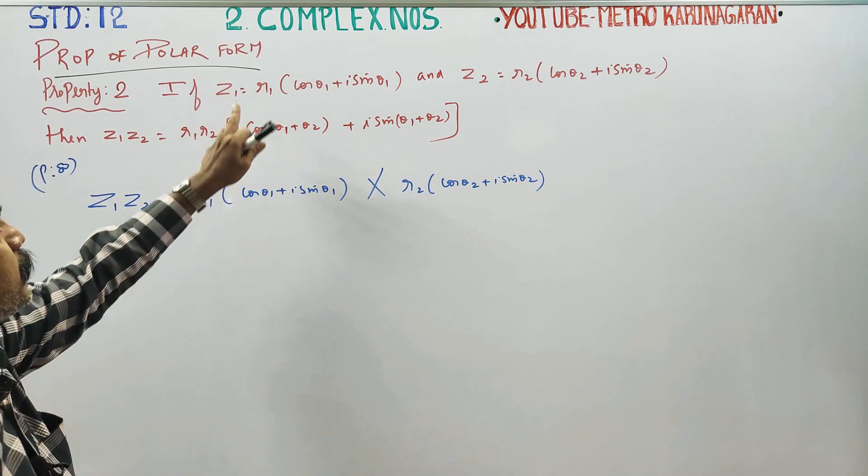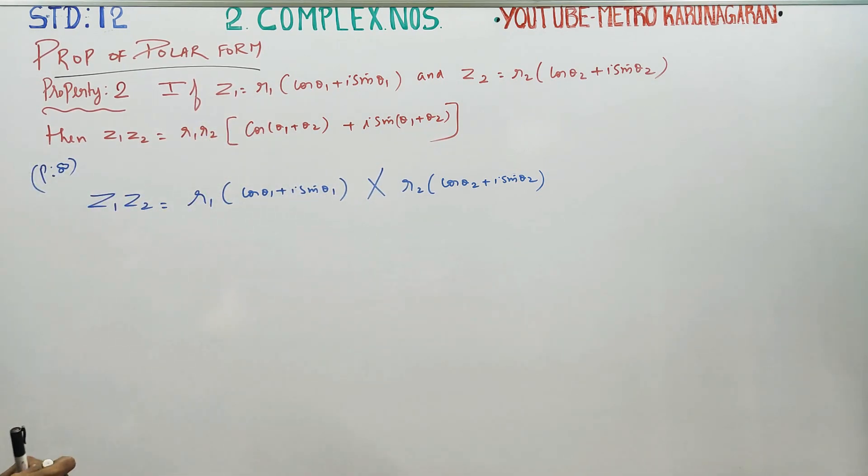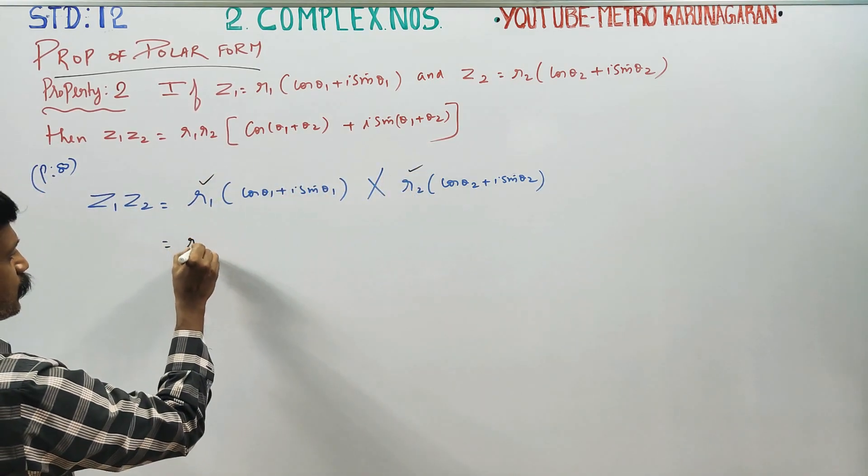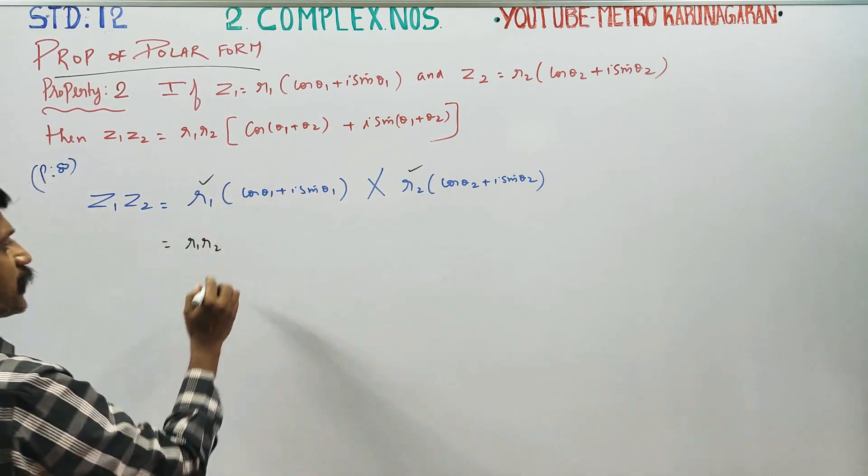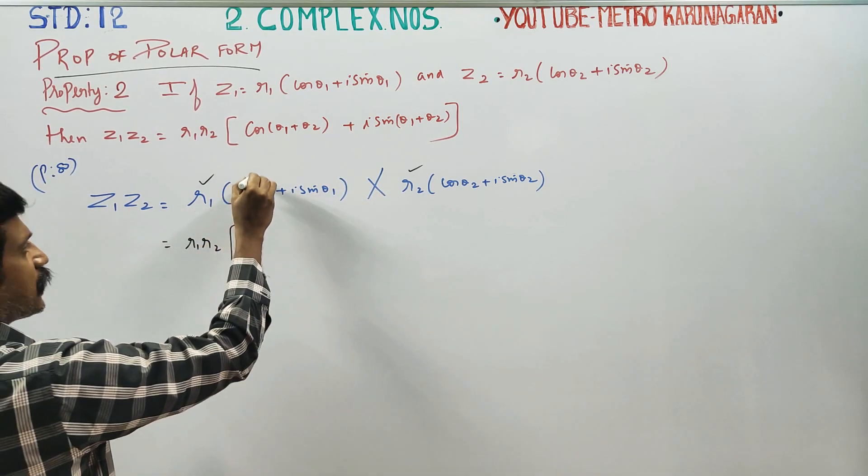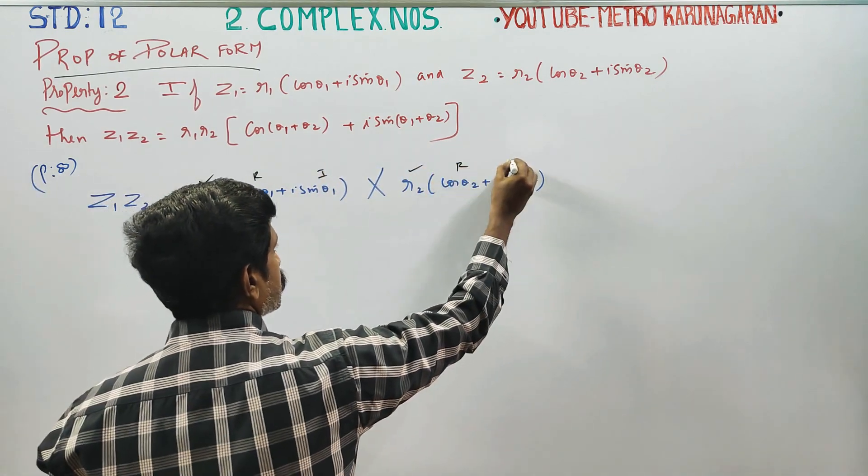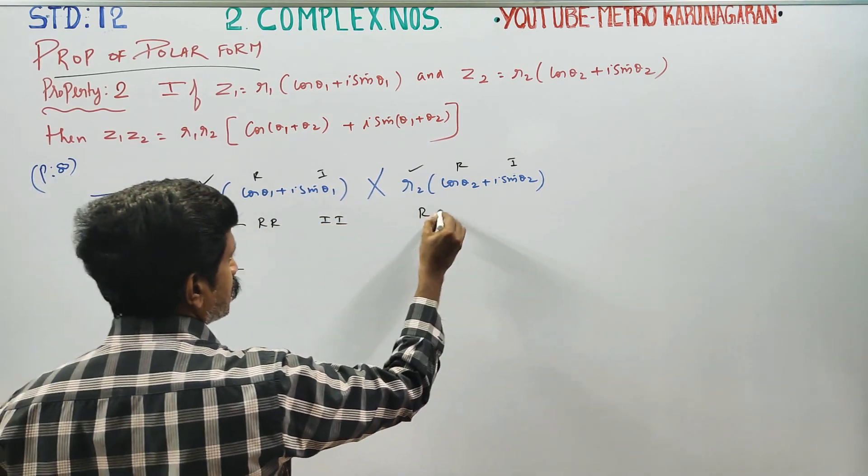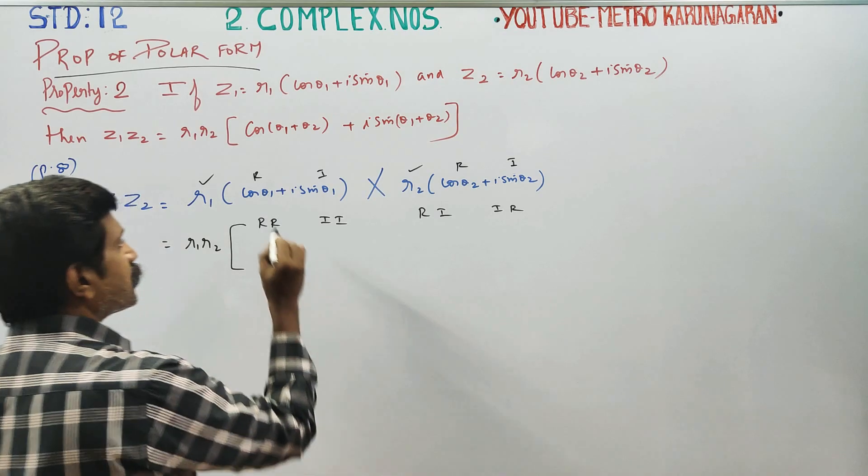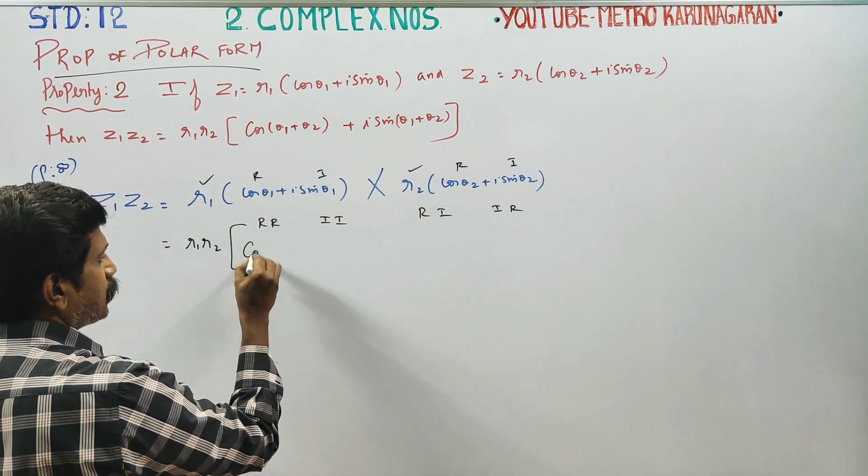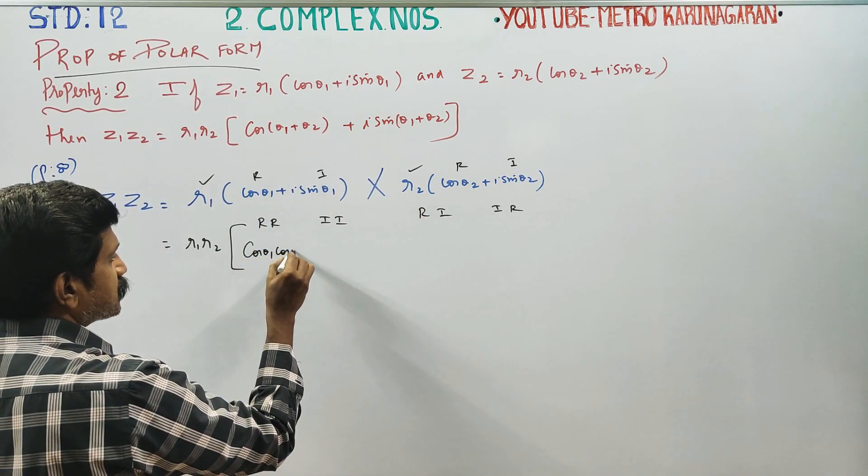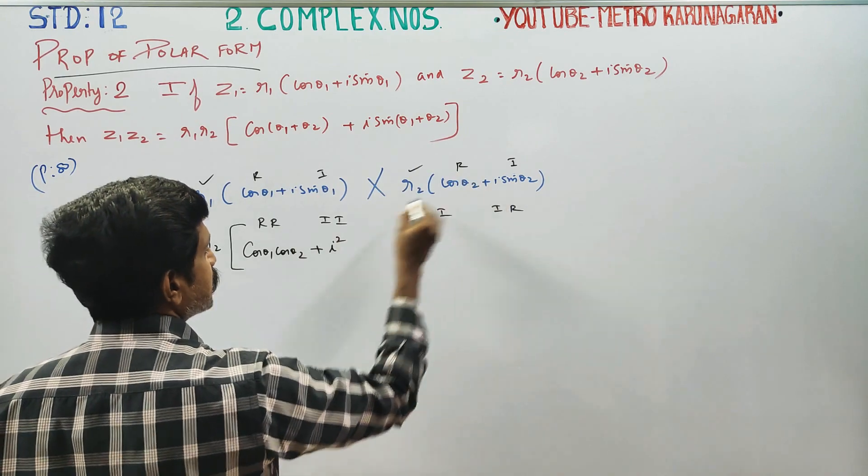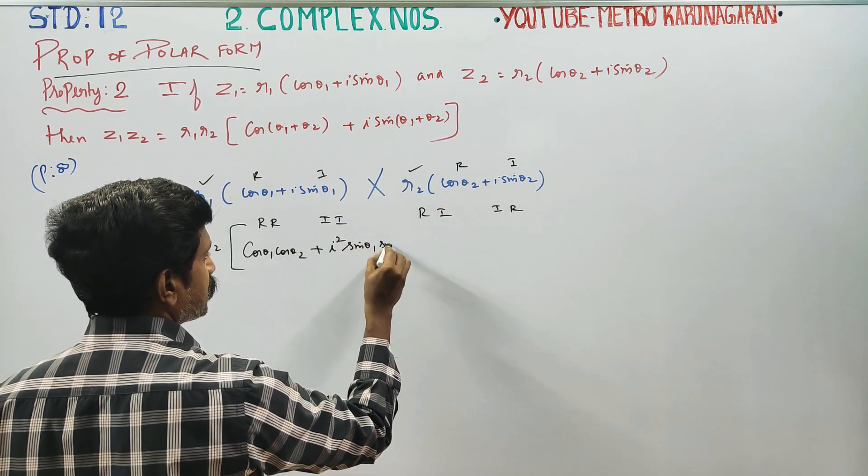When we multiply two complex numbers, just multiply them like ordinary numbers. Multiply R1 into R2. R1 into R2, we get cos θ1 cos θ2 plus i sin θ1 cos θ2, real into imaginary, plus i cos θ1 sin θ2.